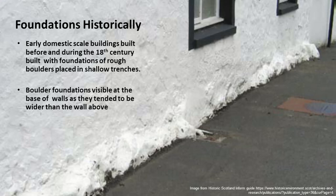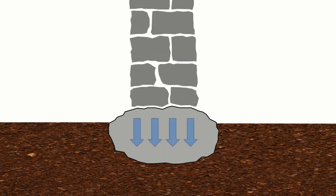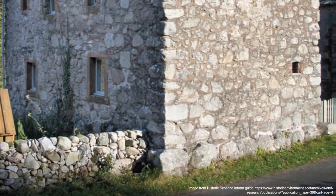Ordinary buildings of a domestic scale were usually located in places with a wide variety of ground conditions, so building directly onto bedrock wasn't always an option. A great deal of small communities were built around farming and trading centers where there would have been topsoil to contend with. The method seen in buildings before the 18th century would be to excavate a trench following the outline of the building. Into this trench would be placed a series of large boulders which would serve as a wide base for the wall above. In many older buildings these boulders are visible at the base of the wall. If you see buildings with stones like these, it usually means there is not a deep foundation below.